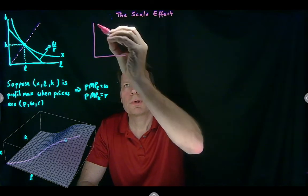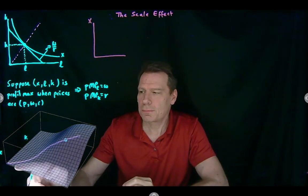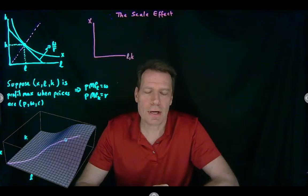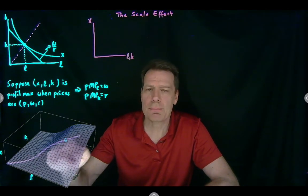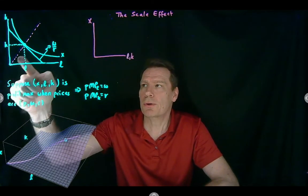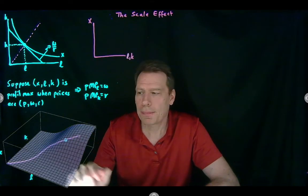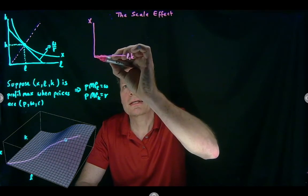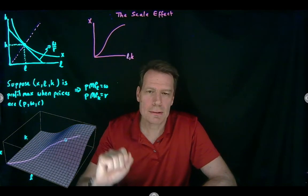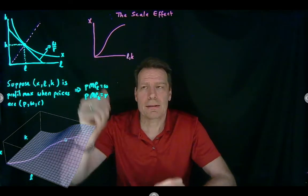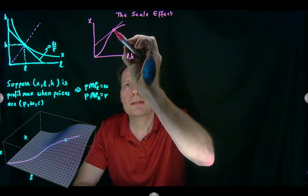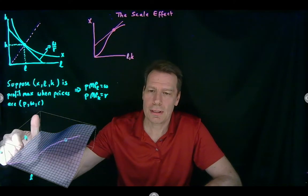We can graph this as a ray from the origin in two dimensions, putting output on the vertical axis and both inputs — labor and capital — on the horizontal axis, because they vary by the same proportion. This is the labor in proportion to capital that occurs on this cost minimizing ray. The shape translates into this shape here. The profit sheet tangent at this point, when we slice it along this ray, becomes just a profit line, and we are at a point that looks like this.